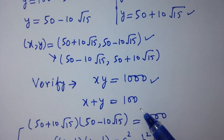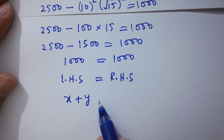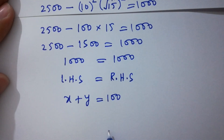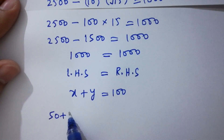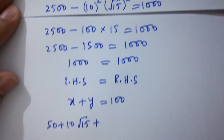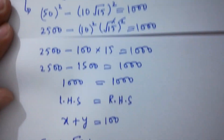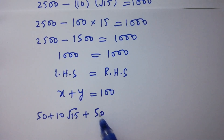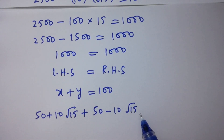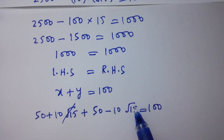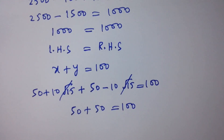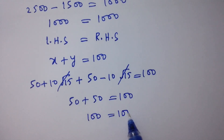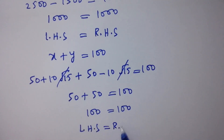Next, verifying x plus y equals 100: putting x equals 50 plus 10 root 15 and y equals 50 minus 10 root 15, we get (50 plus 10 root 15) plus (50 minus 10 root 15) equals 100. The 10 root 15 terms cancel, giving 50 plus 50 equals 100, so 100 equals 100. Left hand side equals right hand side, verified.